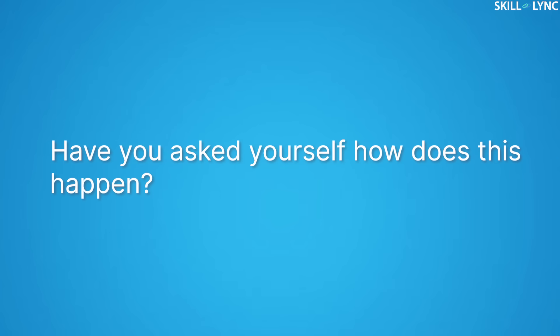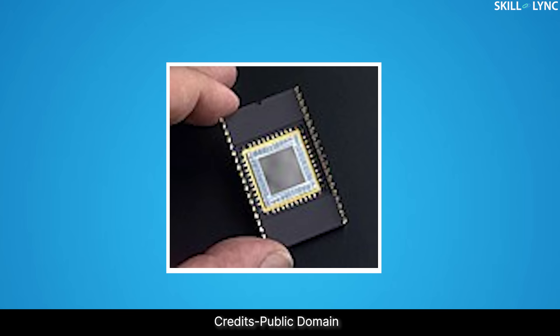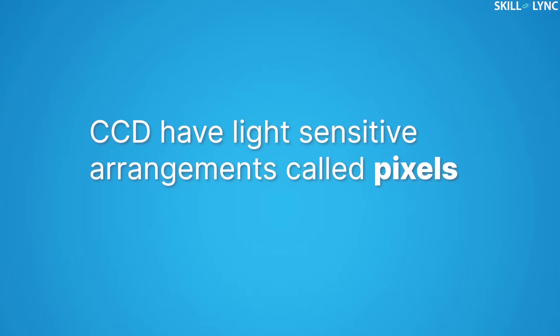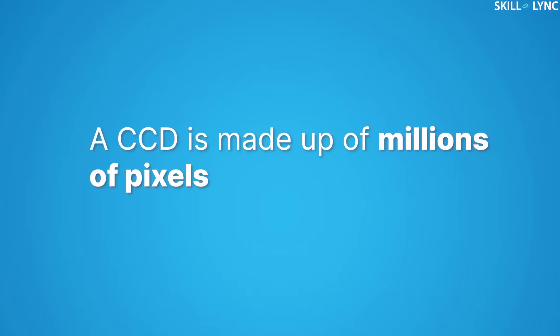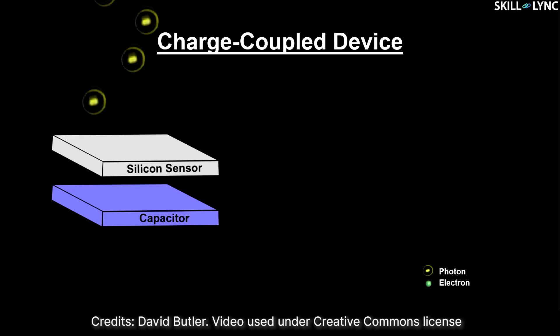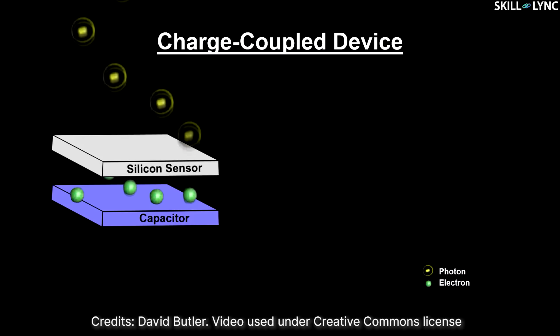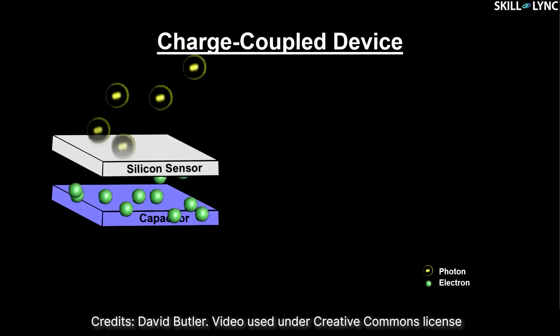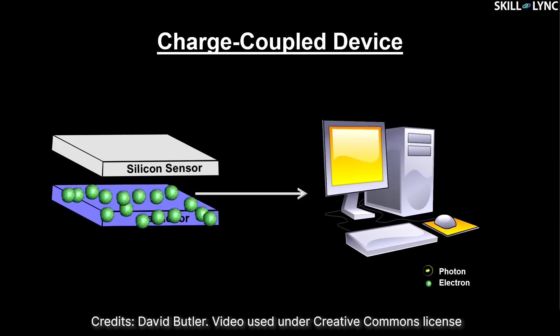A camera captures what we see and produces it in digital form — this is done with the help of charge coupled devices, or CCDs. CCDs have light-sensitive arrangements called pixels, and a CCD is made up of millions of pixels. These pixels are a p-layer of silicon separated by a depletion layer from an n-type silicon layer. When light falls on these pixels, it releases electrons, which are captured by a capacitor placed below the p-n junction layer. This is then processed by the computer and we get the image in digital form. CCDs are also used in fax machines and photocopiers.